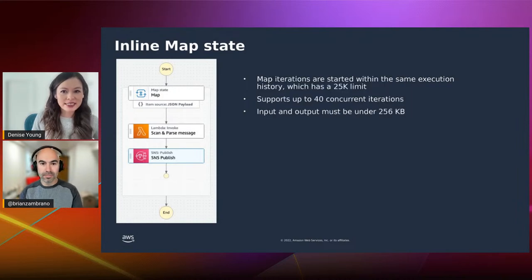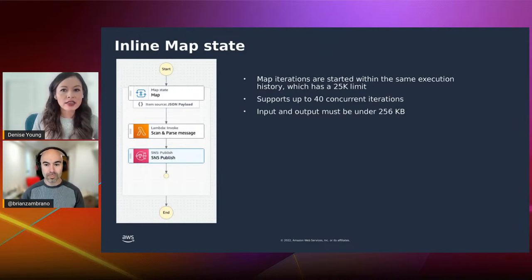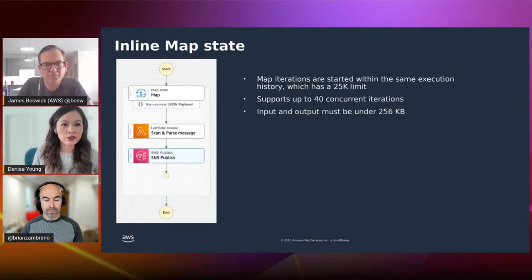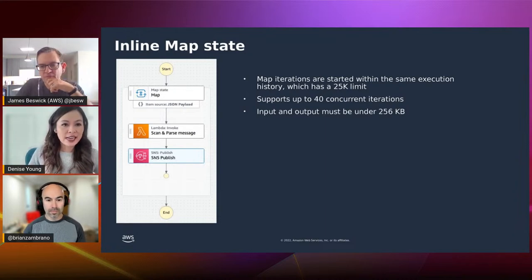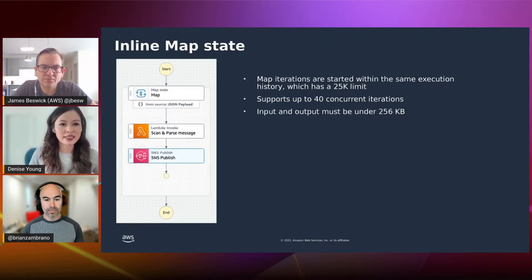But customers wanted more. They wanted to process data on demand for a collection of items already sitting in an S3 bucket. In late 2019 we introduced what we now call the inline map state — it enables dynamic parallelism. You pass the map state an array of items as input and Step Functions will execute the same steps for each item. However, customers ran into limitations: the inline map state runs all steps as part of the same execution history, which is limited to 25,000 events, it supports up to 40 concurrent iterations, and the input/output payload is limited to 256 kilobytes — effectively limiting the number of items that could be processed.